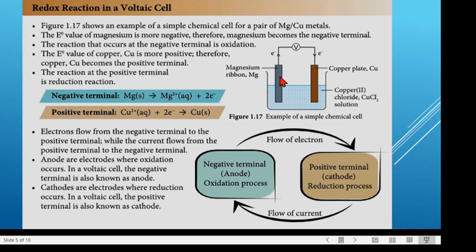The higher the tendency to donate electrons, the more it becomes the negative terminal. Those with less electropositivity — lower tendency to donate but higher tendency to receive electrons — become the positive terminal. The reaction that occurs at the negative terminal is oxidation because the magnesium ribbon loses electrons. Remember: oxidation means losing electrons.